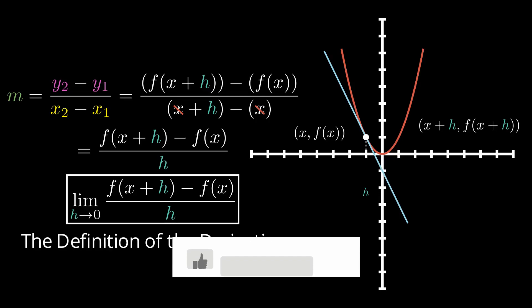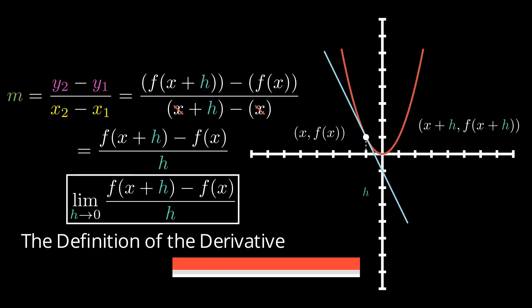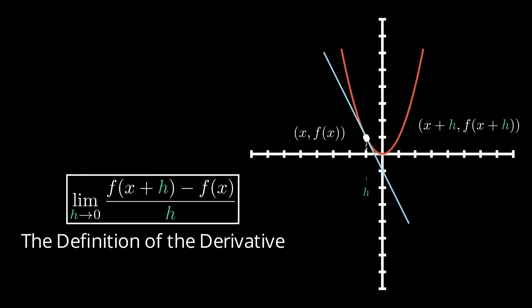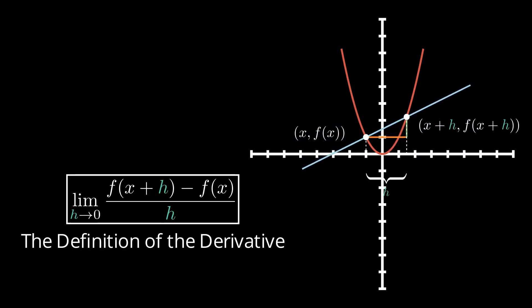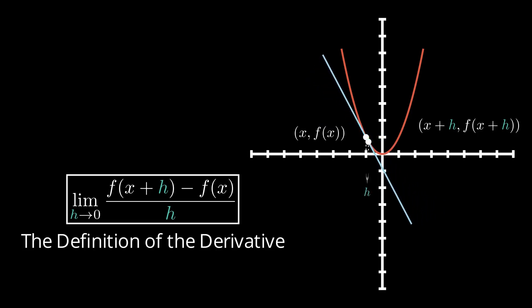That pretty much wraps up this video. To summarize it all: the definition of the derivative, or how we calculate the derivative, is found by taking the slope between two points where the distance between those two points is almost nothing. And that is how we find the derivative. I hope you found this video helpful, guys. Take care.